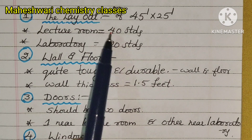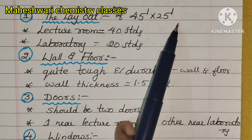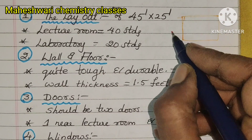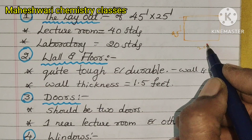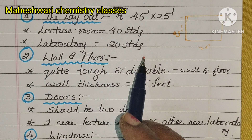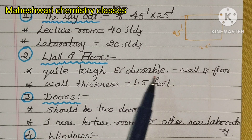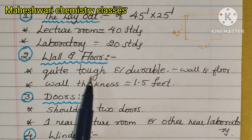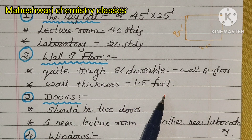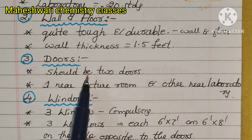The layout is 45 feet by 25 feet, accommodating 40 students. The wall and floor are quite tough and durable. Wall thickness is 1.5 feet. There should be 2 doors: one nearer to the lecture room and the other nearer to the laboratory.